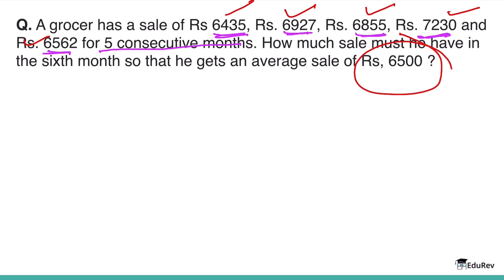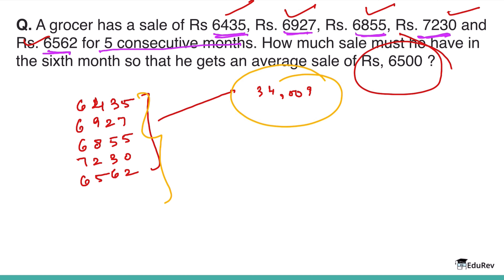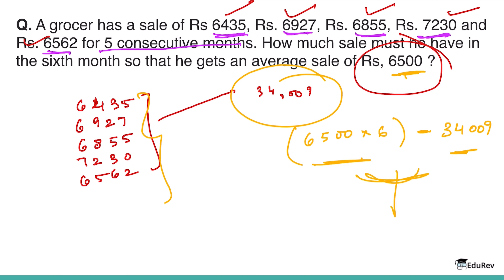The total sale for 5 months is 6,435 + 6,927 + 6,855 + 7,230 + 6,562 = 34,009. The required total for 6 months at an average of ₹6,500 is 6,500 × 6 = 39,000. Subtracting the 5-month total: 39,000 − 34,009 = 4,991. So the grocer must achieve a sale of ₹4,991 in the sixth month.